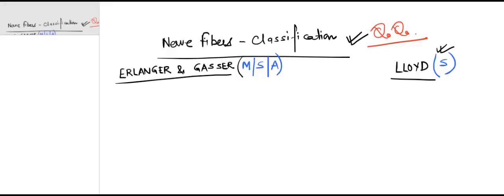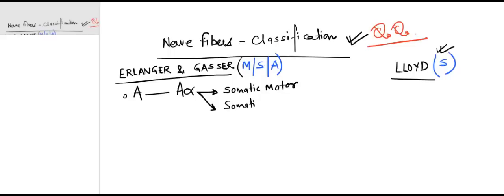In the Erlanger and Gasser system, the first group of fibers is called group A nerve fibers. These A fibers are further divided into A-alpha fibers. A-alpha fibers are of two types: they can be somatic motor fibers, and they can be somatic sensory fibers. The somatic sensory fibers sense proprioception.